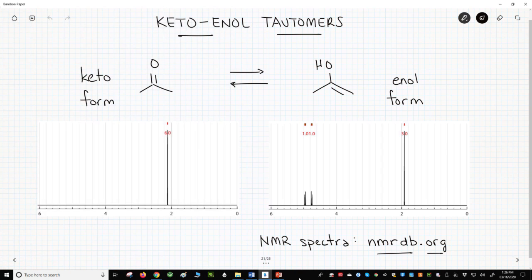Let's quickly review carbonyl tautomers. On the left, we have acetone in its keto form. In solution, acetone exists in equilibrium with its enol tautomer as well, which is drawn to the right.